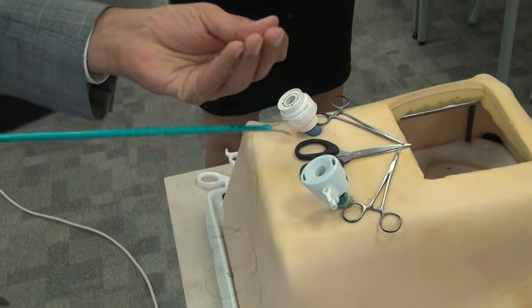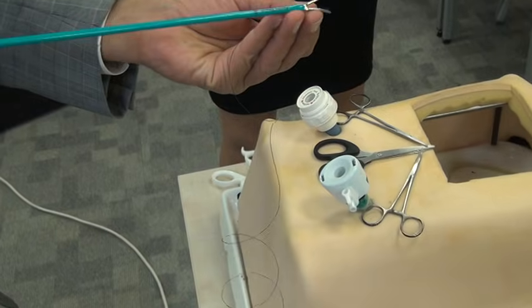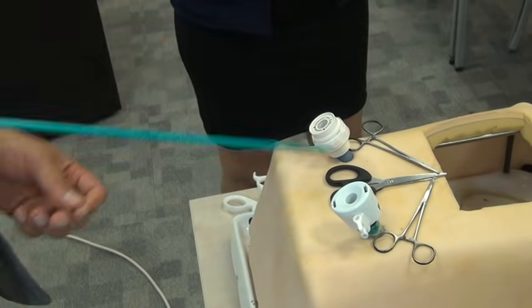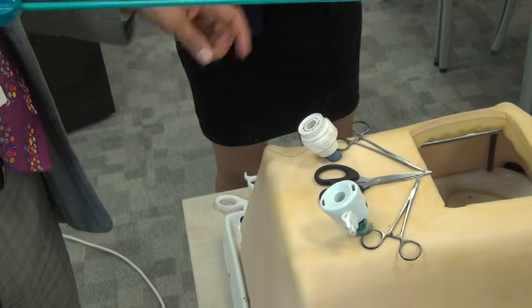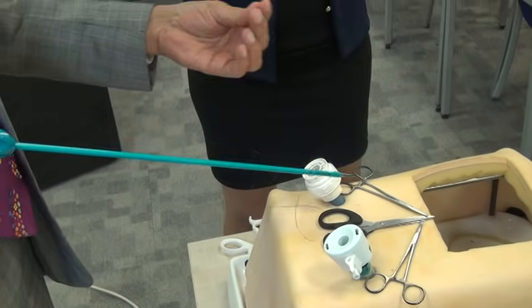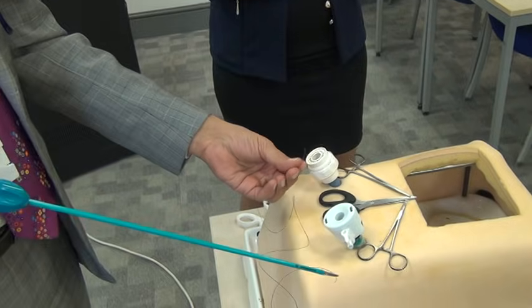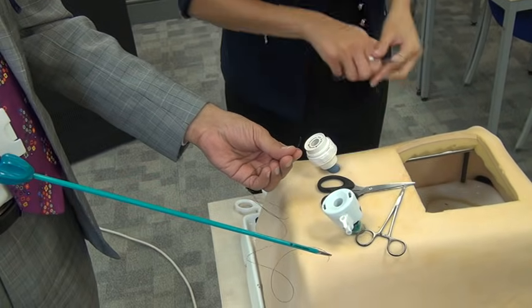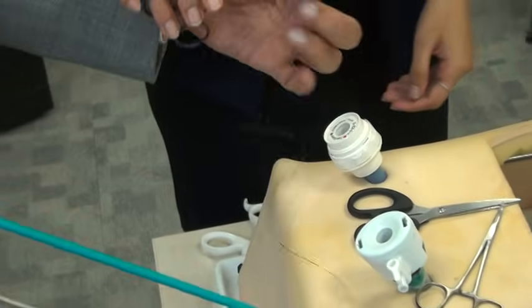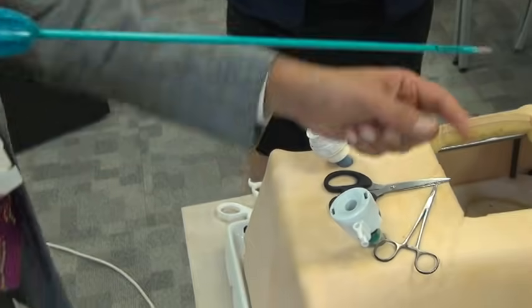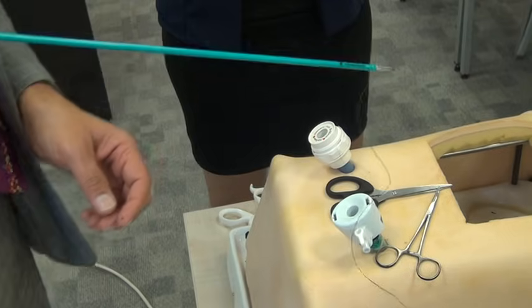This is extracorporeal knot tying Roeder's knot around a tubular structure. That's your needle end of the thread and this is the tail end. We put a clip at the tail end and we just leave it on the side so that you know it's the tail end.